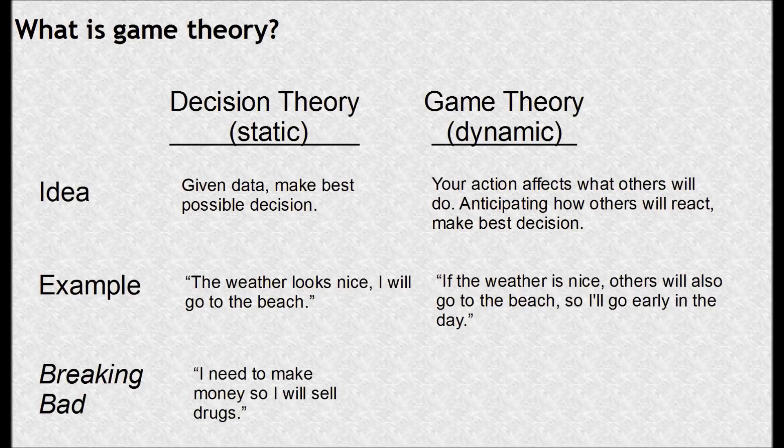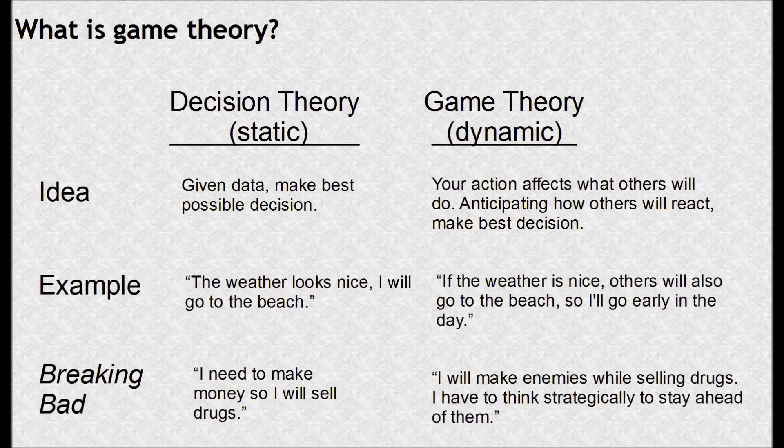Now we'll get to how this relates to Breaking Bad. The decision theory way of going about it is that Walt would just say, 'I need to make money, so I'm going to sell drugs.' Walt quickly learns that he needs to use game theory — he realizes he's going to make enemies while selling drugs, and he's going to have to think strategically to stay ahead of them.